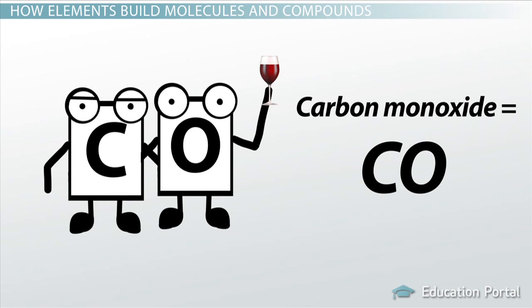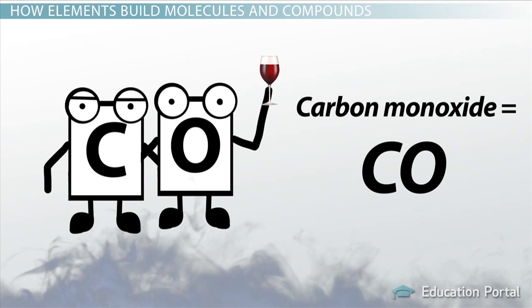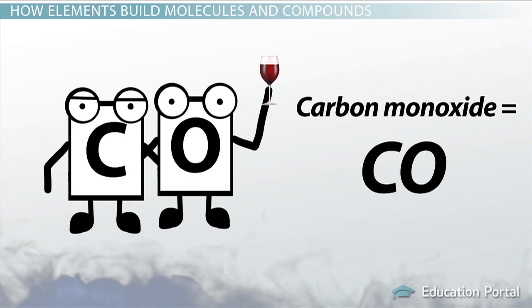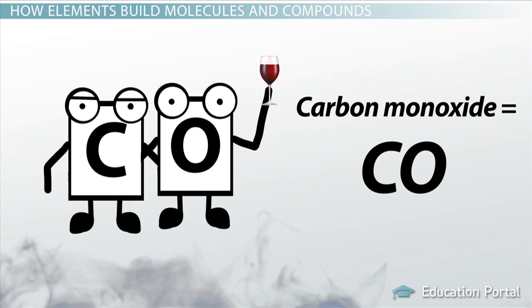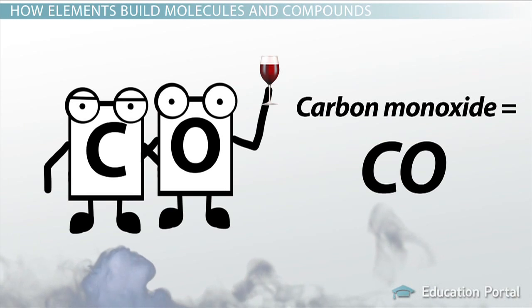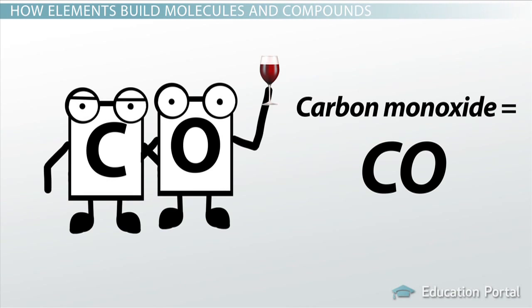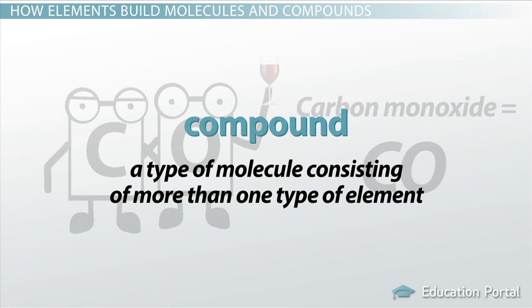On the other hand, carbon monoxide, which is a poisonous gas emitted from the tailpipe of your car, is comprised of two different elements — carbon and oxygen. Since carbon monoxide consists of more than one type of element, it is considered a compound. A compound is a type of molecule consisting of more than one type of element.